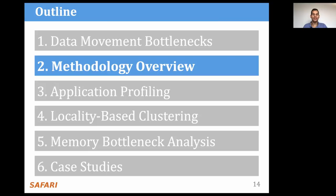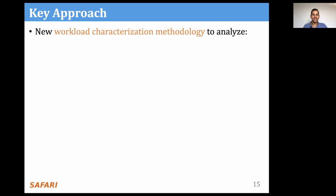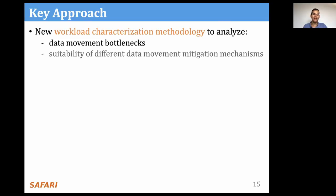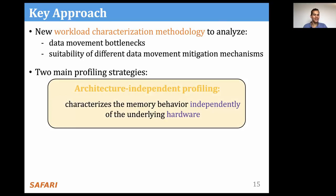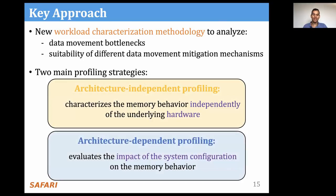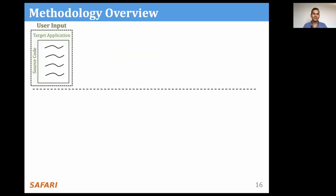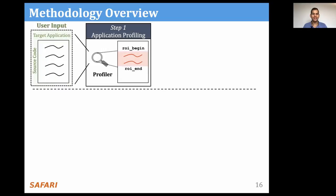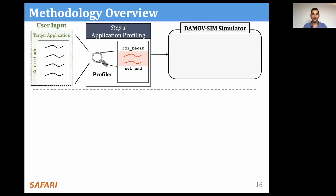Our goal is to develop a methodology that can identify the different sources of data movement bottleneck in an application, and comprehensively compare compute- and memory-centric data movement mitigation techniques. We develop a new workload characterization methodology that identifies different data movement bottlenecks and the suitability of different mitigation techniques. To do so, we use two different profiling tools: architecture-independent profiling tools, which characterize memory behavior independently of the underlying hardware, and architecture-dependent profiling tools, which evaluate the impact of system configuration on memory behavior. Our methodology takes as input the target application source code and input dataset, then profiles the application using a hardware profiling tool.